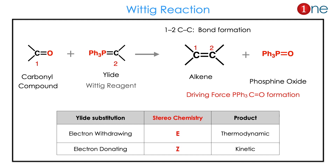What is the Wittig reaction? It is a conversion of a carbonyl group into an alkene. It happens through a ylide, and it is called the Wittig reaction. The driving force for this reaction is phosphine oxide formation. So it is a functional group conversion: carbonyl into alkene.